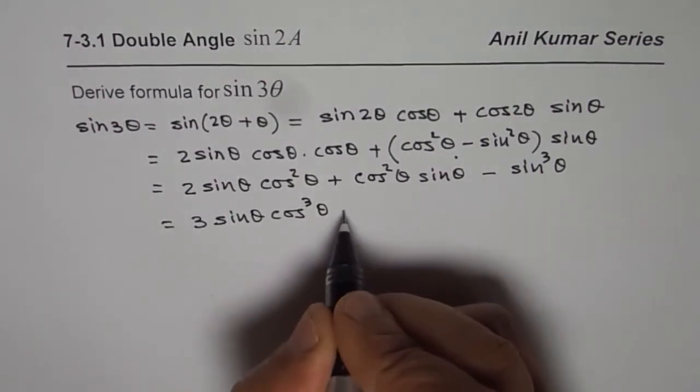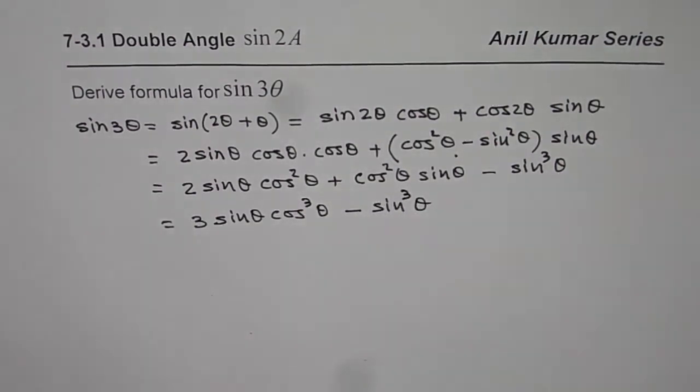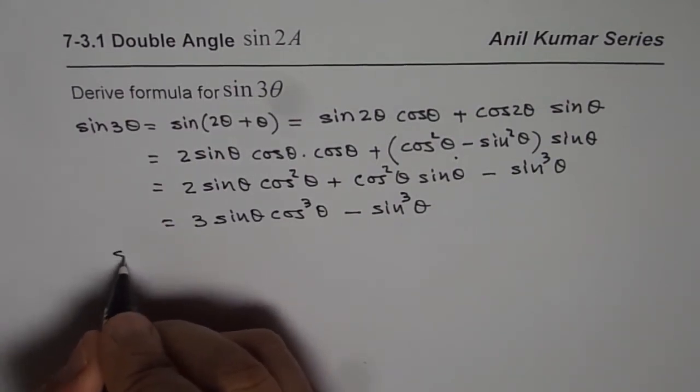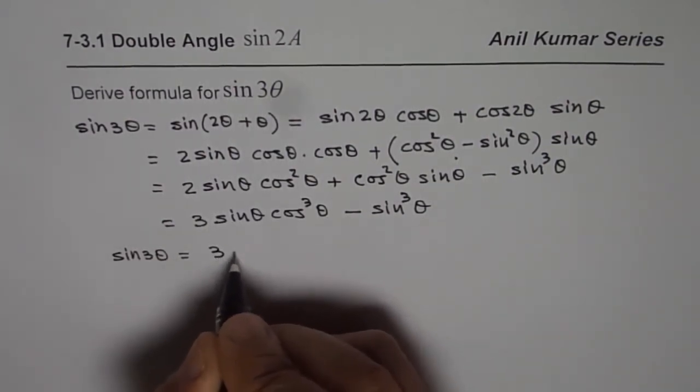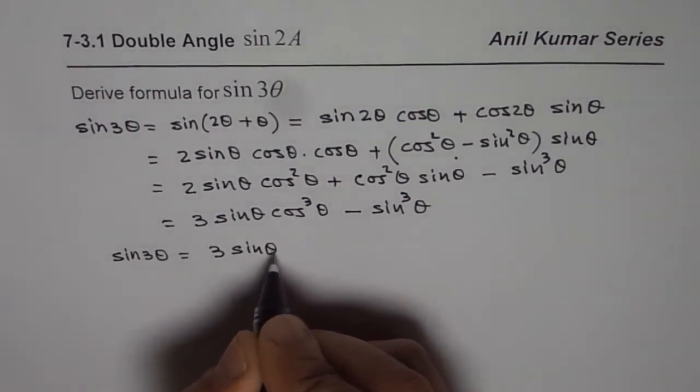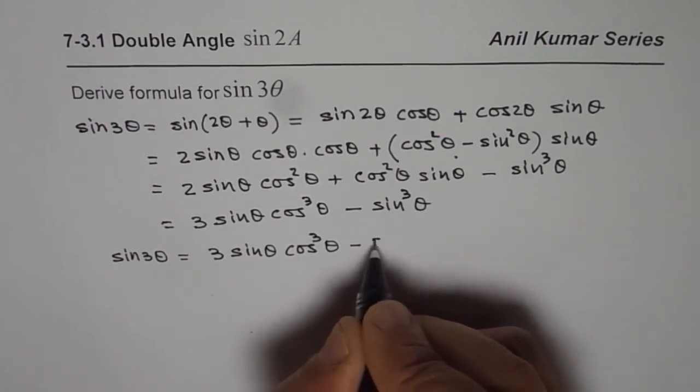And here we get minus sin³ θ. So that is the formula for sin 3θ. We get sin 3θ equals 3 sin θ cos² θ minus sin³ θ.